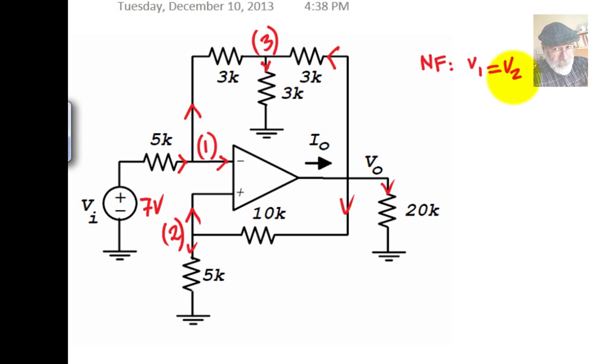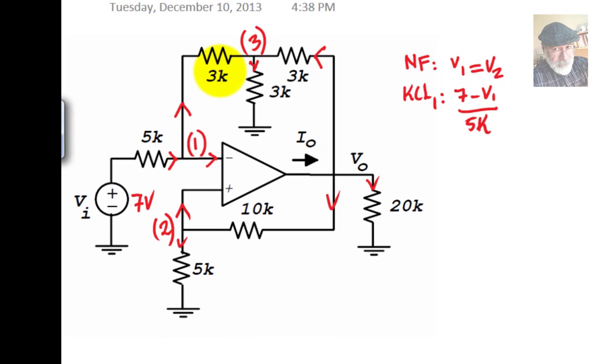Next, we write a KCL equation for each one of nodes 1, 2, and 3. For node 1, current going in, 7 minus V1 over 5 kilos. And that is equal to the current leaving 0 amps this way, and V1 minus V3 over 3 kilos.